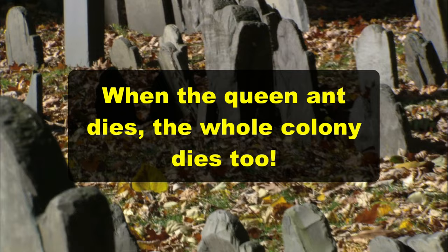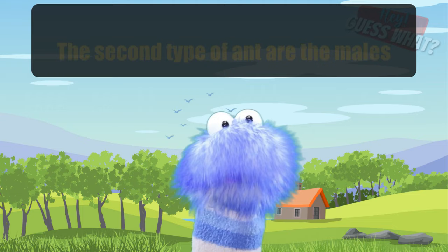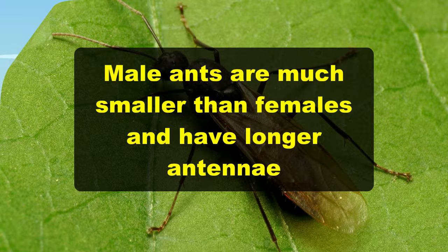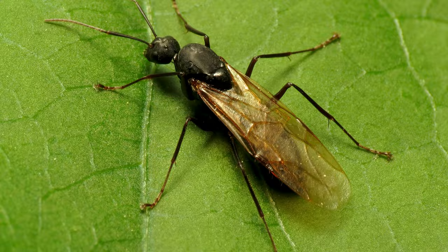The second type of ant are the males, also called drones. Male ants are much smaller than the females and also have longer antennae. Male ants have wings and their only job is to mate with the queen. And once they mate with the queen, they die a week or two later.